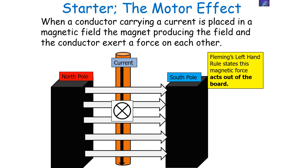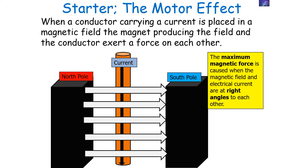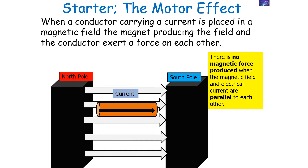Looking at the situation on screen, if we use Fleming's left-hand rule, we can work out that the direction of the magnetic force must be acting out of the board or screen. The maximum magnetic force is caused when the magnetic field and the electrical current are at right angles to each other, whilst there is no magnetic force produced when the magnetic field and electrical current are parallel to each other.